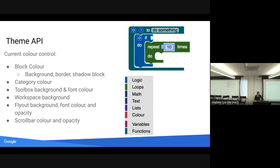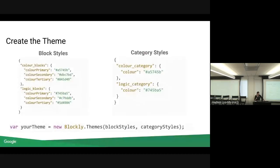We'll talk about how we can change all of those today. In order to create the theme, we need block styles and category styles. Block styles is an object that holds the style name and then an object holding color primary, color secondary, and color tertiary.